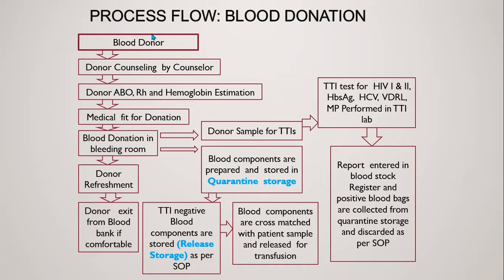Let us see first what is the process flow of blood donation. The blood donor is first counseled by a counselor, then ABO blood grouping and Rh typing is done for the donor, then hemoglobin estimation of the donor, then medical examination is done by a blood transfusion officer or resident doctor, then blood is donated in the bleeding room and a sample is kept for transfusion transmitted infection testing.